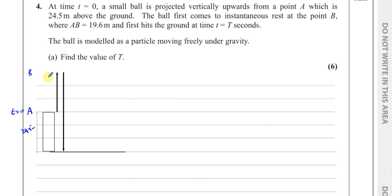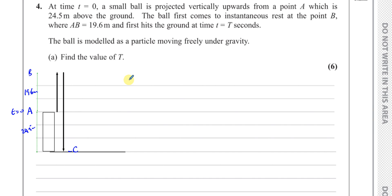Point B is where it comes to instantaneous rest under the force of gravity acting downwards. It then falls down to the ground. The distance from A to B is 19.6 meters. The point where it hits the ground, I'll call point C. We want to find the time from when it was thrown until it hits the ground. There are a number of methods we could use — I'll find the time from A to B first, then from B to C.